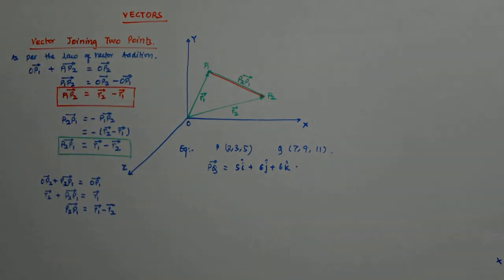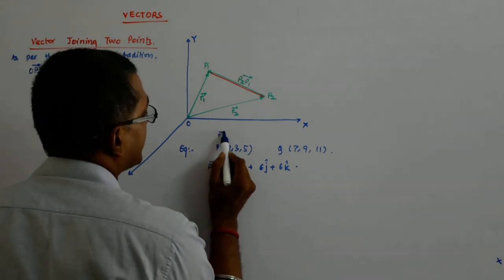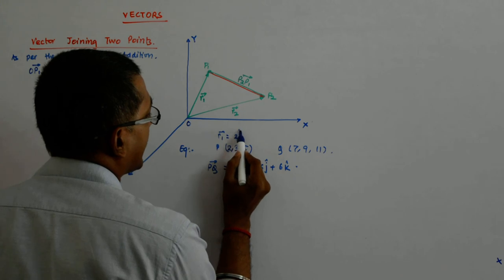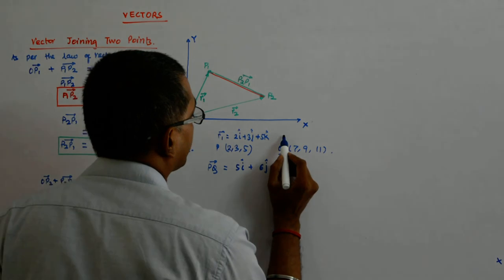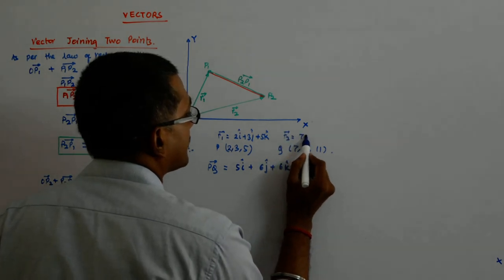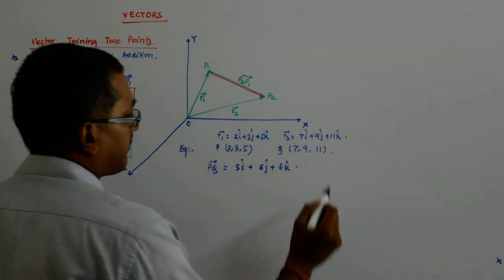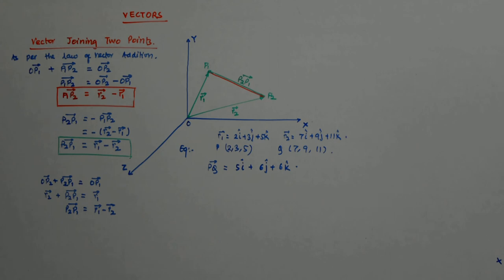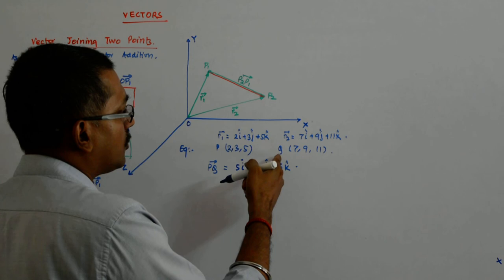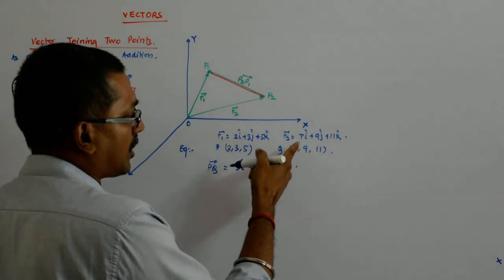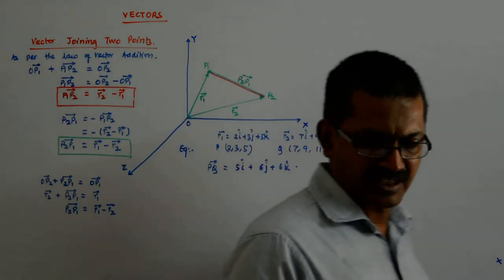Do we get that? Because you will have to write that the position vector corresponding to this is 2i cap plus 3j cap plus 5k cap. R2 is 7i cap plus 9j cap plus 11k cap. That's why, and you are actually asking me to find PQ. So r1 plus PQ is equal to r2. So PQ is equal to r2 minus r1, correct? We understand?